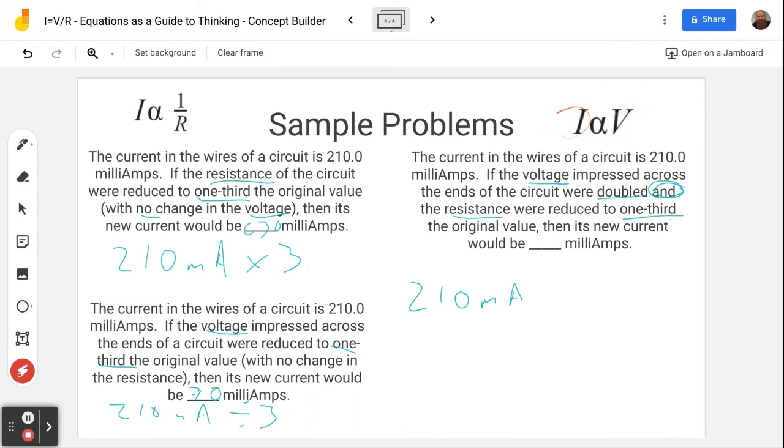First thing we see is the voltage, which is directly proportional, doubles. So if voltage is bigger, current is bigger, so times two. If voltage doubled, this will double, the current will double, so that's going to be 420 milliamps due to that change. But then we also have the change in the resistance. So the resistance is being cut to one-third. Well, resistance is inversely proportional. If resistance gets smaller, current gets bigger. This got three times smaller, this gets three times bigger, so times three.